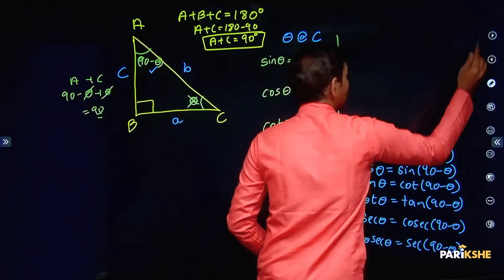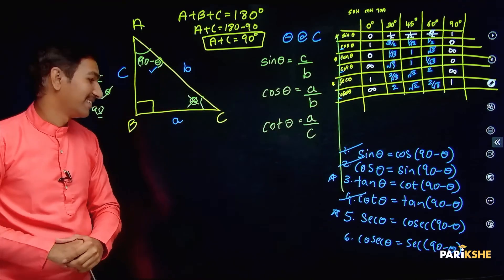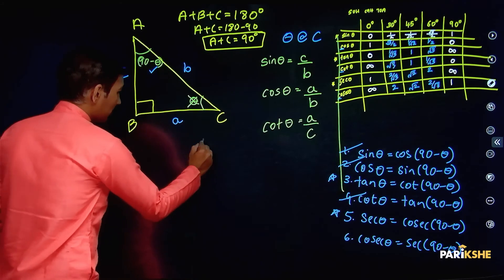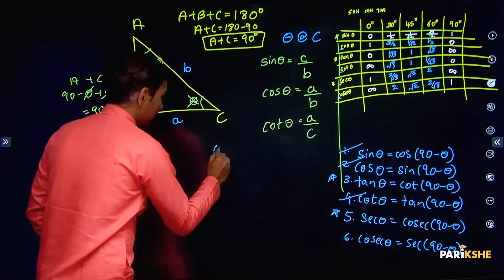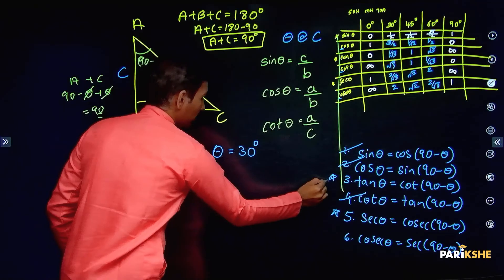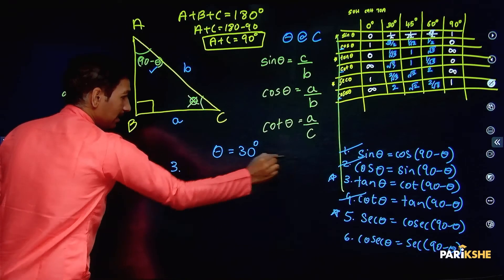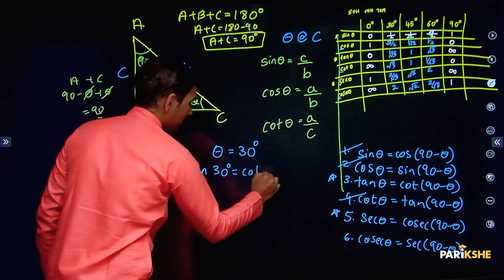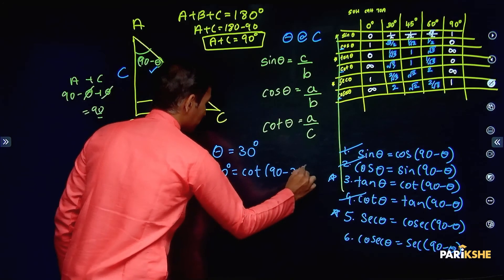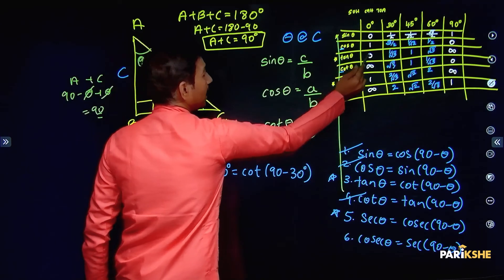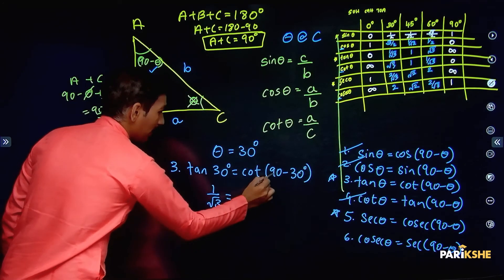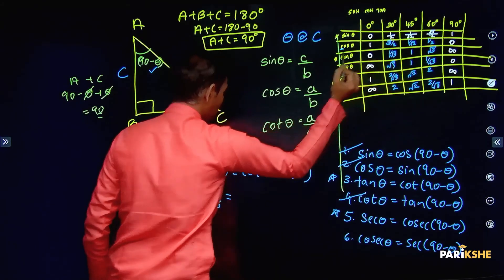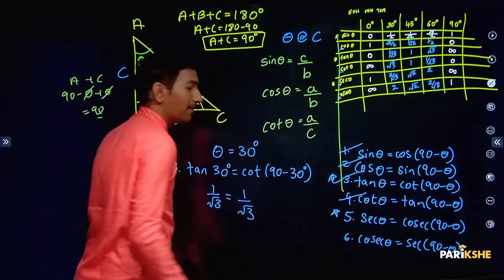All right, so here is a table for verification. With theta equals 30 degrees, we are verifying the third result: tan 30. The value of tan 30 is 1 by root 3. Now, 90 minus 30 equals 60, so cot 60 is also 1 by root 3. Which means this result is verified as correct.